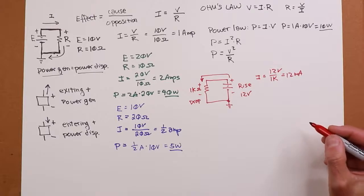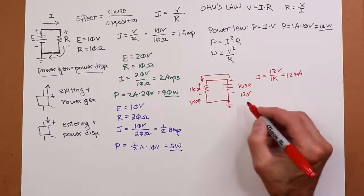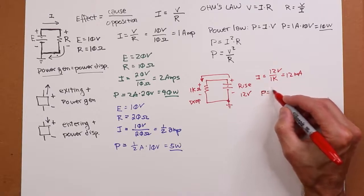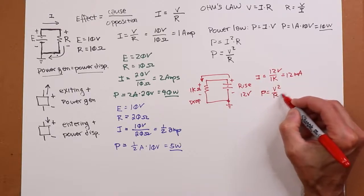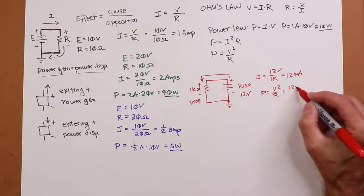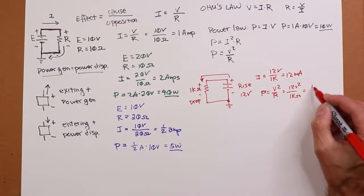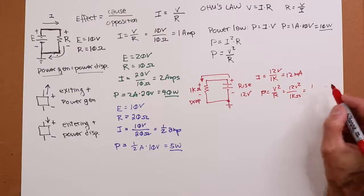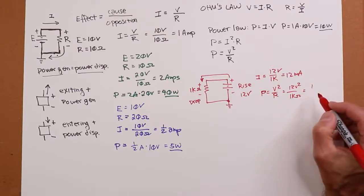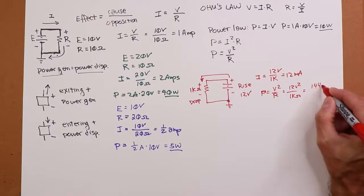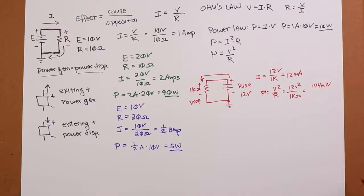If I want to find the power, I can either do V squared, 12 squared over R. So 12 squared is 144. So I'd have 144 squared volts divided by a k ohm. So 1 over k is millis, so it would be 144 milliwatts.